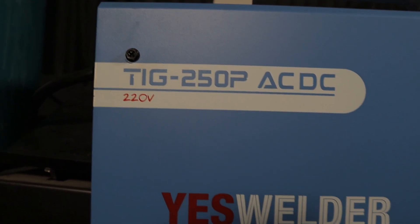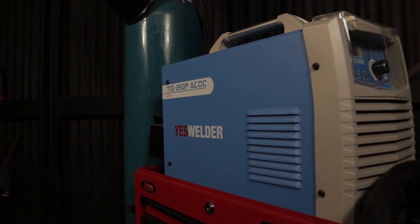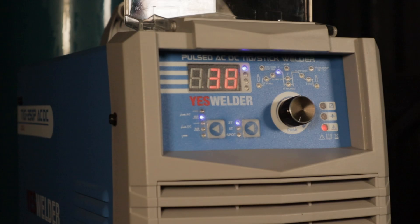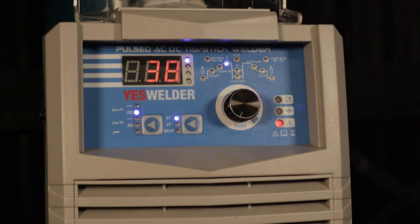By the end of the video you're going to have a good understanding of the settings I've chosen and why. I'm using the YesWelder 250P ACDC machine. You'll see that it's a very capable machine.